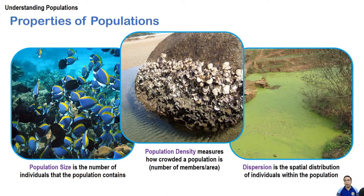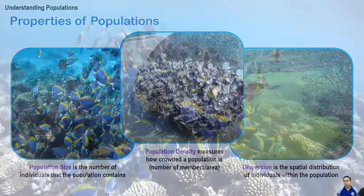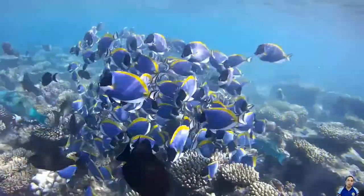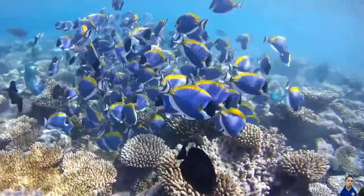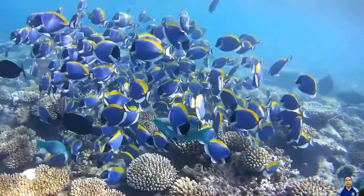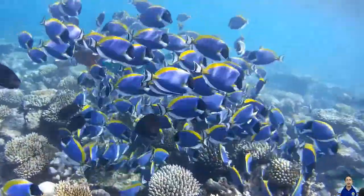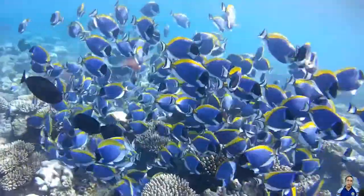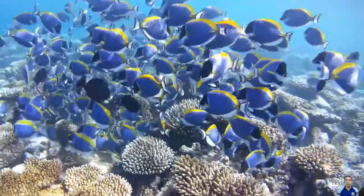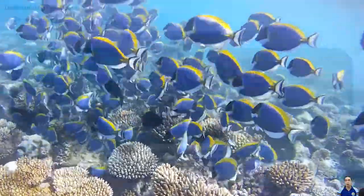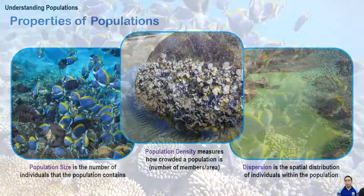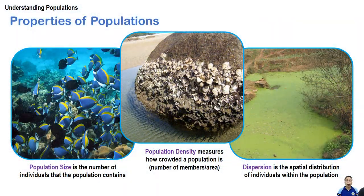Population size is the number of individuals that the population contains. This surgeon fish here are kind of shoaling — they are swimming independently but in such a way that they try to stay connected, forming a social group. Population density measures how crowded a population is, so it's the number of members in a given area.